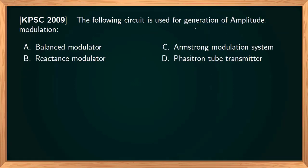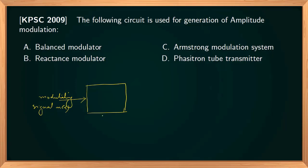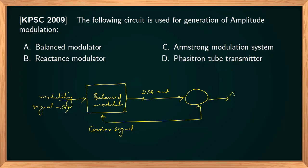The following circuit is used for generation of amplitude modulation. AM can be generated using a balanced modulator, which takes two signals: a modulating signal M(t) and a carrier signal. The balanced modulator produces a double sideband suppressed carrier (DSB) output. This DSB signal is then combined with the carrier wave in a combining network to produce the AM signal. A reactance modulator is used for producing FM. The Armstrong modulation system is an indirect method of producing FM. So the answer is balanced modulator.